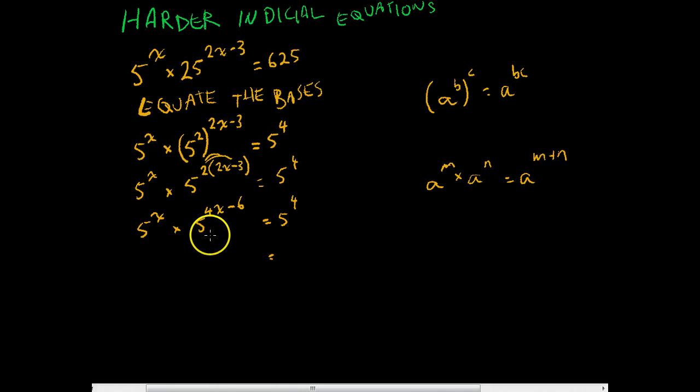If we apply that to this bit here, we'll see that 5 to the power of x times 5 to the power of 4x minus 6 will be 5 to the power of x plus 4x minus 6 equals 5 to the power of 4.